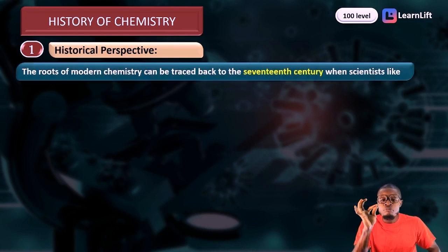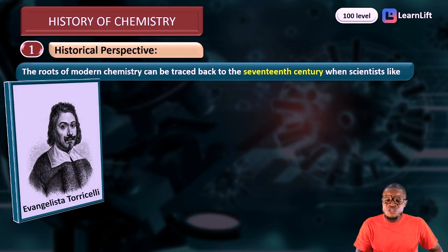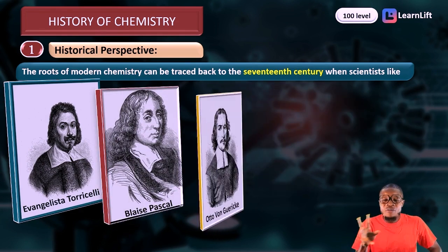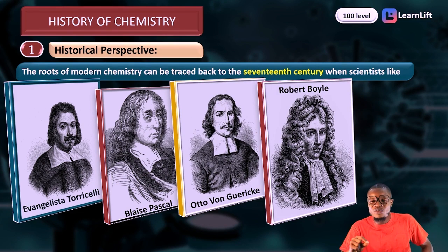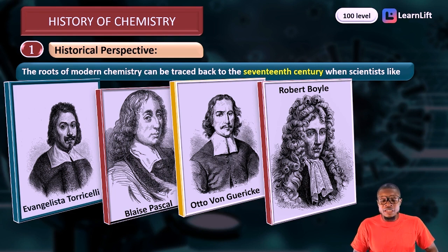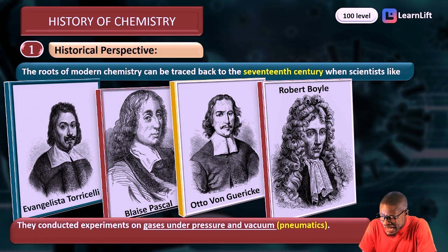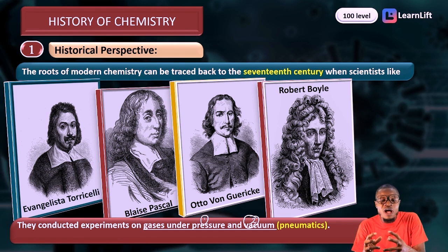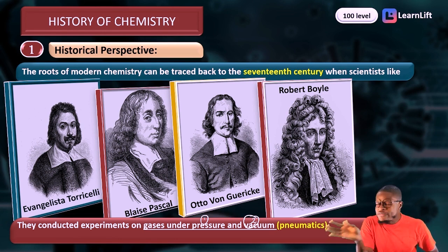The roots of modern chemistry can be traced back to the 17th century, with scientists like Evangelista Torricelli, Blaise Pascal, Otto von Guericke, and Robert Boyle. These scientists made remarkable contributions, conducting experiments on gases under pressure and vacuum. This study of gases under pressure and vacuum has a special name — pneumatics — and so the era of pneumatic chemistry was pioneered by these scientists.